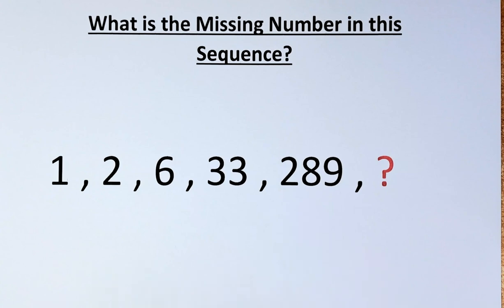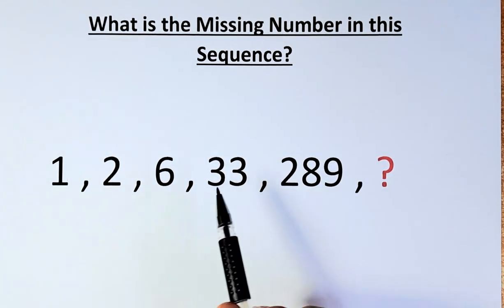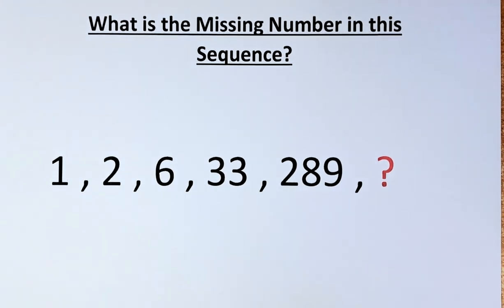Okay, so if you look at the number, it's increasing at an exponential rate. So 1, 2, 6, 33, and then go up to 289, and you know that you have to use either a cube or square or to the power question.